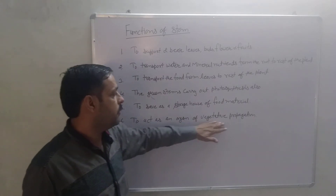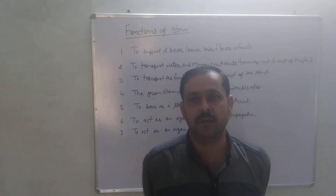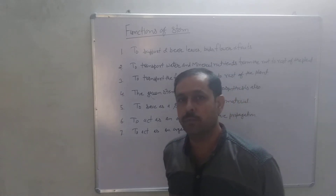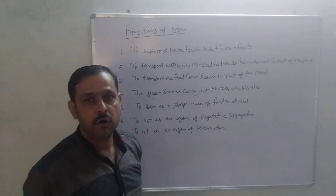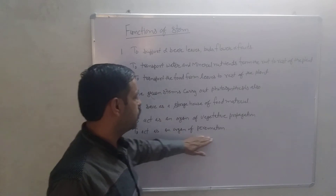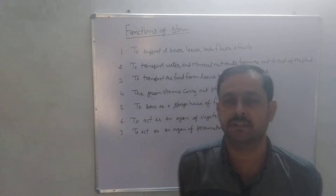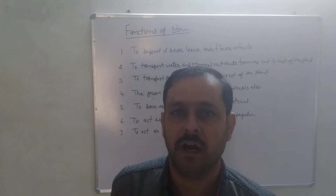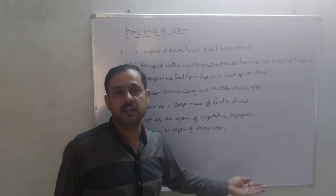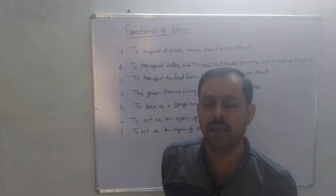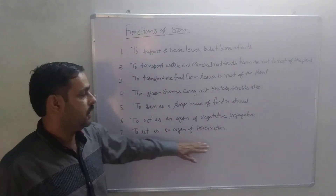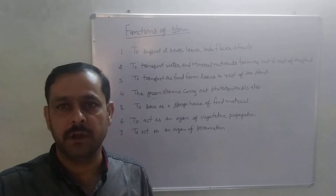Next, to act as an organ of vegetative propagation. Sub-underground or sub-aerial parts of the stem are modified to produce a new plant by vegetative propagation. And last, to act as an organ of perennation. Stem makes perennial plants survive for many years. As we know, underground stems can survive in adverse environmental conditions, so they are the organ of perennation. Now our next topic is leaf.